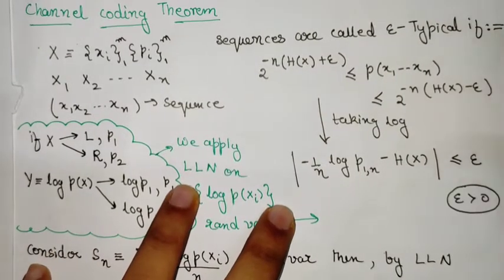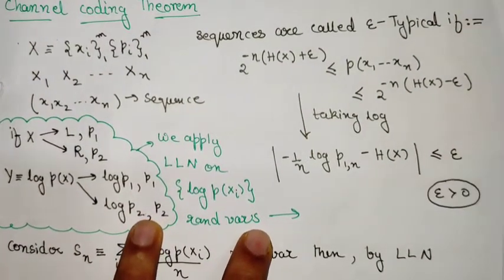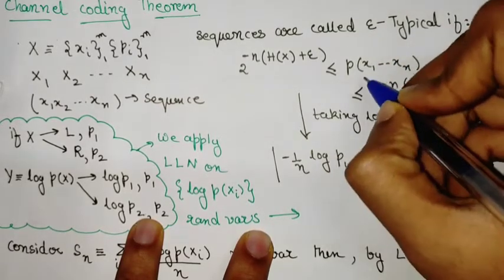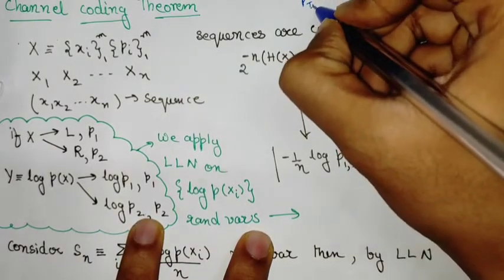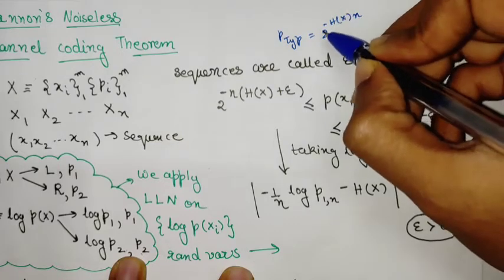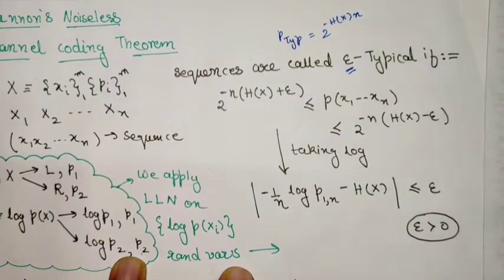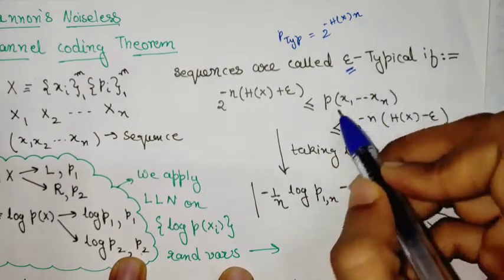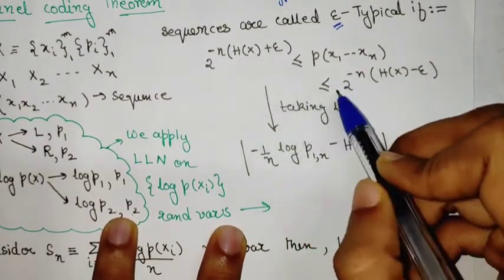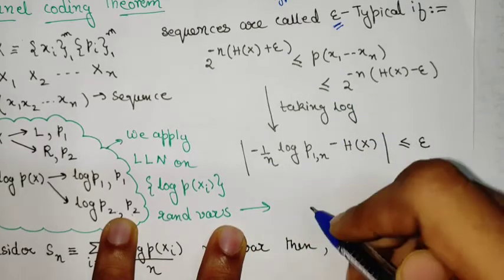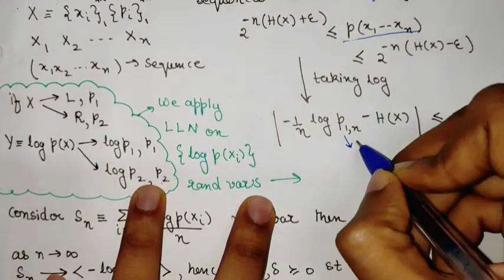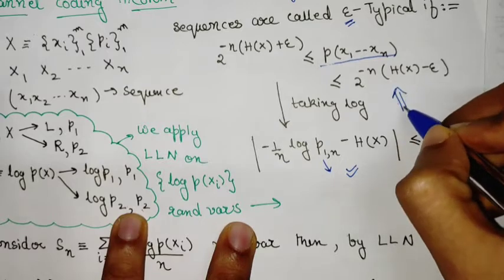Now we make this idea more concrete. A sequence is called epsilon-typical by definition. A typical sequence has a probability of approximately 2^(-H(x)·n). We loosen this condition into an epsilon neighborhood of this probability, so the probability of getting an epsilon-typical sequence is bounded above and below by specific quantities. Taking the logarithm of these inequalities produces an equivalent inequality involving the log-probability sum, which we will work with.